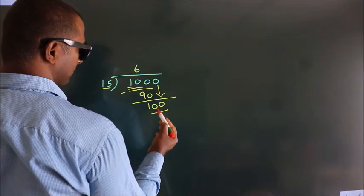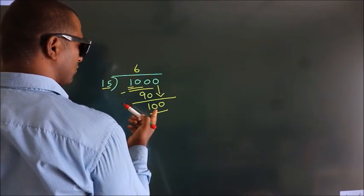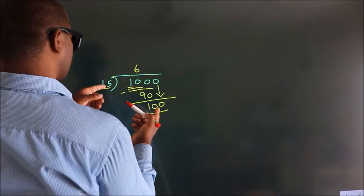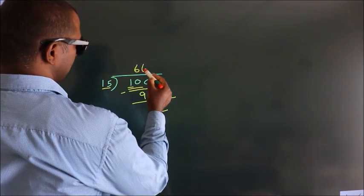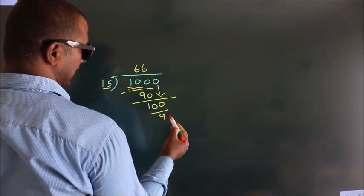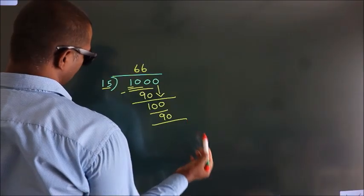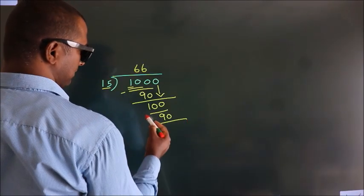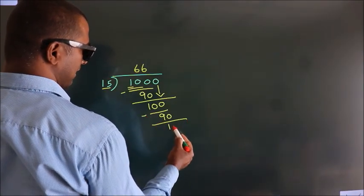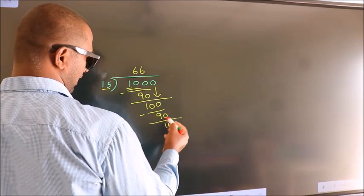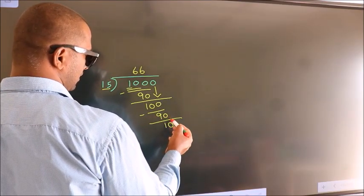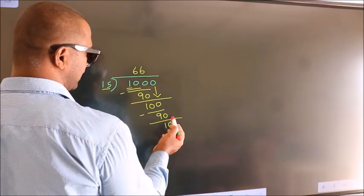So 100. A number close to 100 in the 15 table is 15 times 6, 90. Now we subtract and get 10. After this, there are no more numbers to bring down.